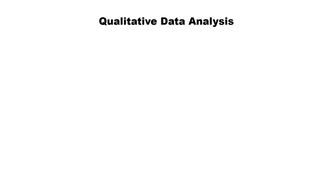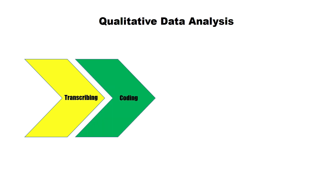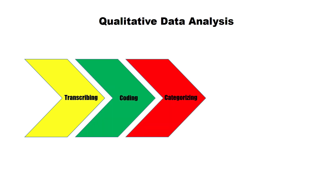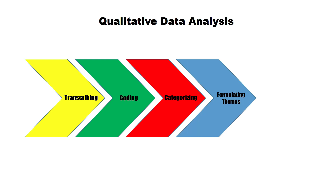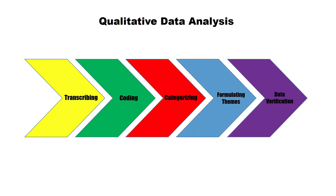The data analysis should be composed of, first, transcribing, then coding, and then categorizing, and then formulating themes, and lastly would be data verification. Transcribing is simply about copying or writing down what is on the recorder. So we are going to deal again about coding and categorizing and formulating themes.